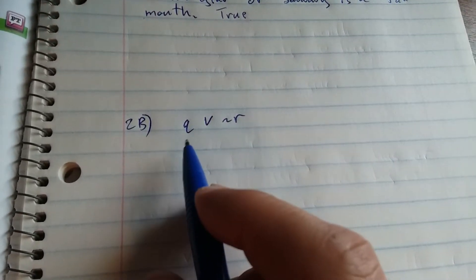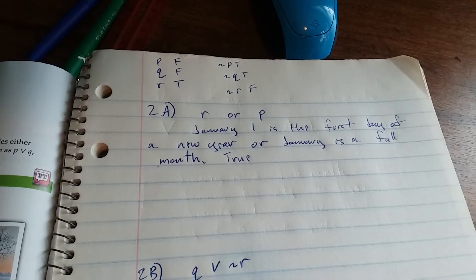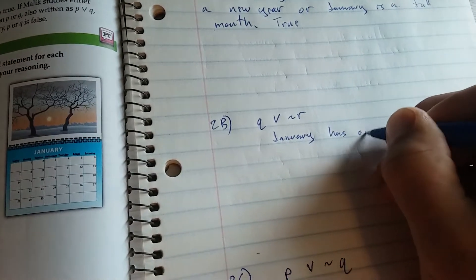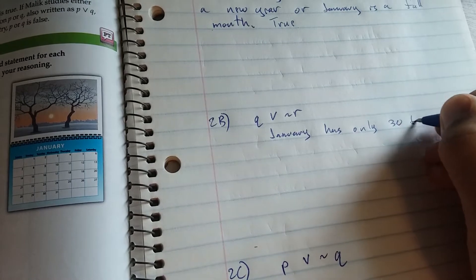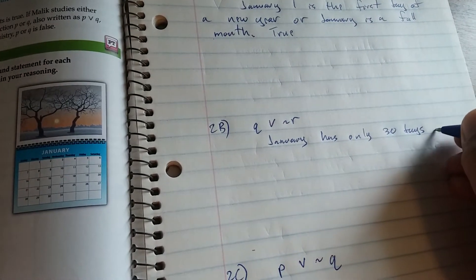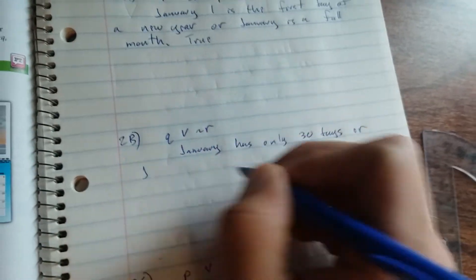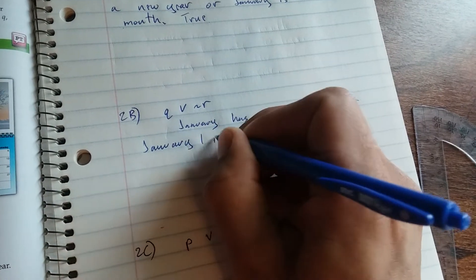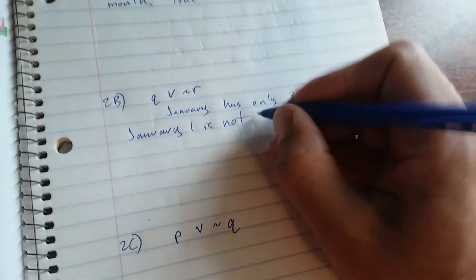Now we have Q or not R. Q is January has only 30 days. Okay, so that part's false. Or not R. January 1st is the first day of the new year, so not R means January 1st is not the first day.